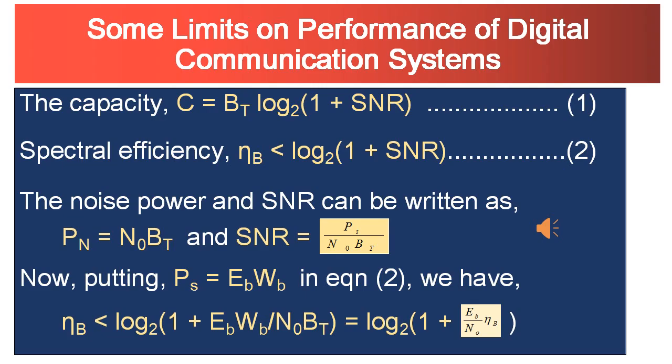AWGN - additive white Gaussian noise. A is for additive, W is for white, G is for Gaussian, N is for noise.